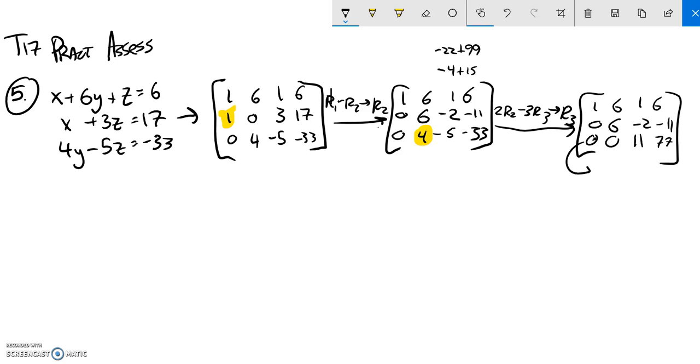So this is great because now I know what Z is. Notice that this third row says 11Z is 77. So Z must be 7.